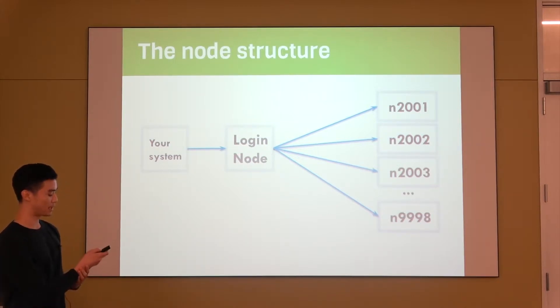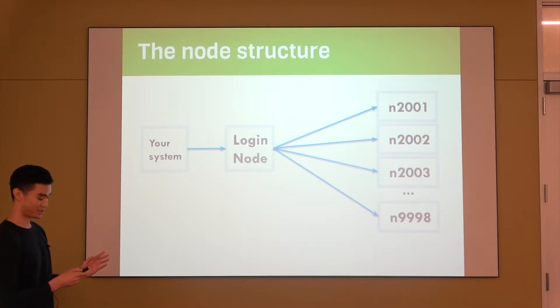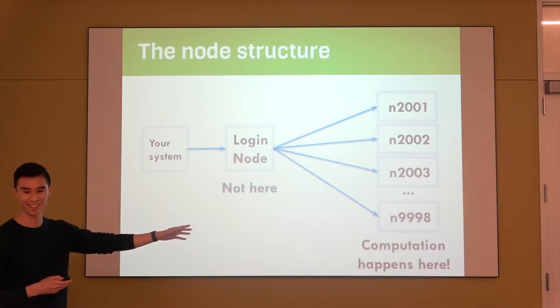Where the real computation happens is on these nodes here with the N and then the big number—this is actually what they're called on Hoffman 2. You'll be submitting or running jobs on these nodes that are separate from the login node. So just one point I wanted to clarify is that the computation happens on those nodes, not on the login node.